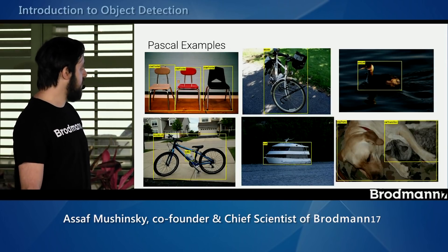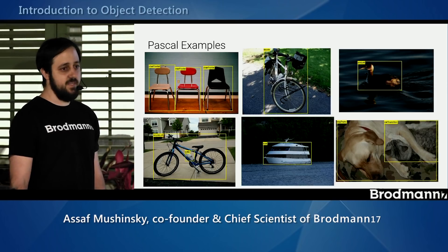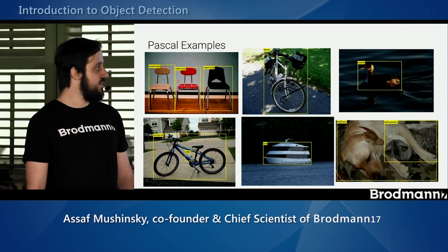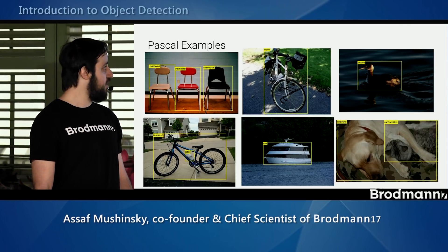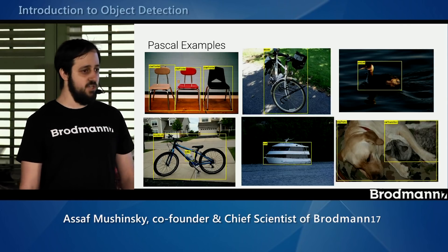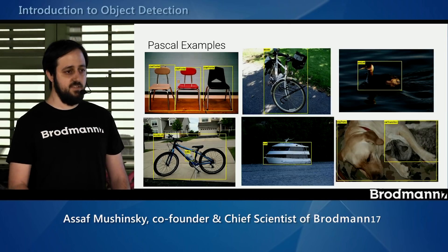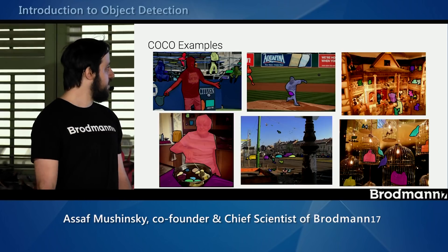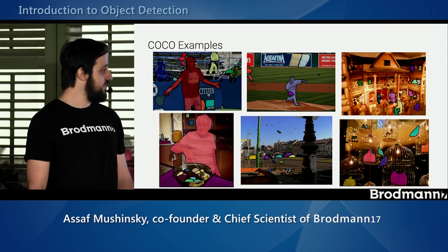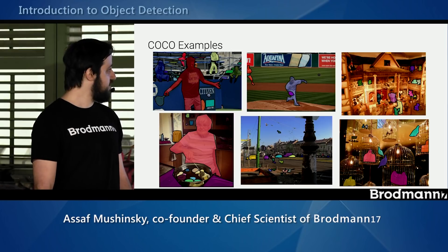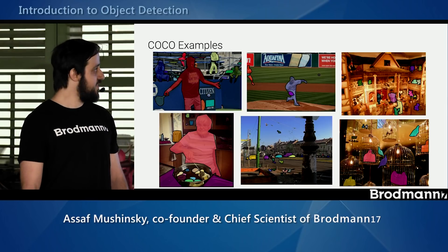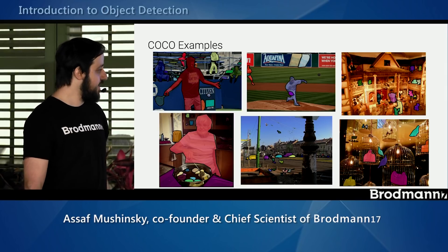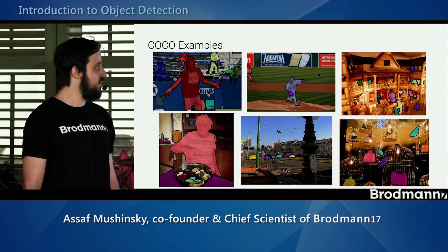Here are examples from Pascal — it's basically classification plus localization in most cases. Most images contain a single object that's pretty large in the frame and not very challenging, which is why accuracy for current algorithms on this dataset is quite good. In contrast, COCO examples show much harder scenarios: objects can be much smaller and less defined, like a small ball, and there can be much higher levels of occlusion.